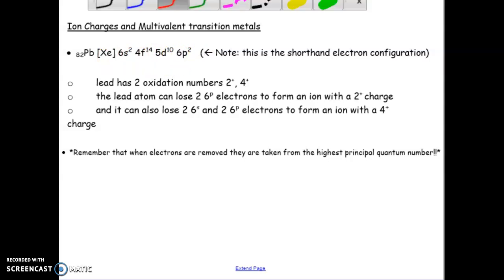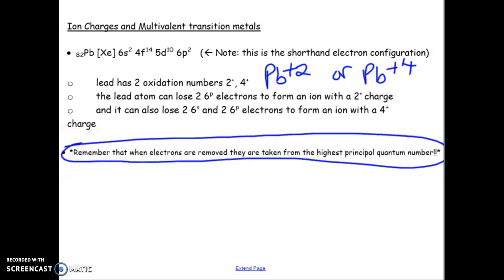So, lead has two possible states that it can be in. We can have lead positive 2 or lead positive 4, right? It's a transition metal. Now, when you are removing those electrons, be mindful, and the reminder is here, you must remove from the highest N number first.